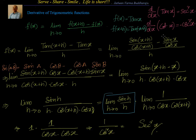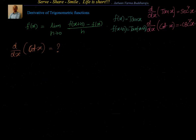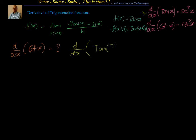Now, based on this, can we find the derivative of cot x? We know cot x is nothing but tan(π/2 - x). Let us see how to find the derivative of cot x by leveraging the derivative of tan x. We know the derivative of tan x is sec²x. Is there a way to write cot x in terms of tan x? Yes — cot x = tan(π/2 - x).